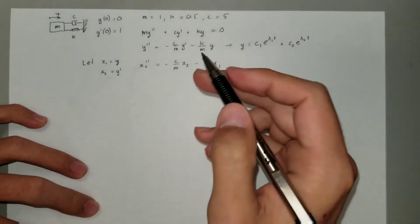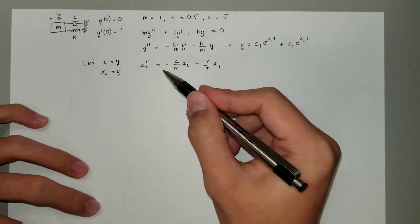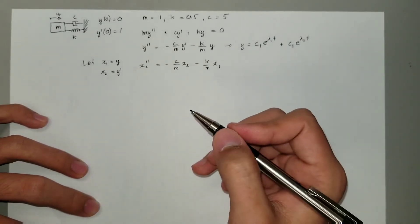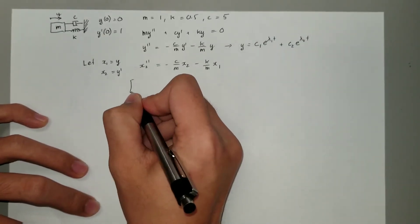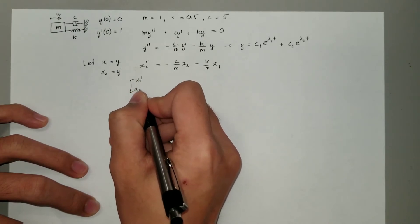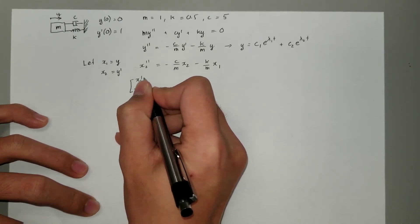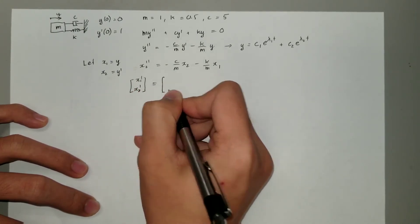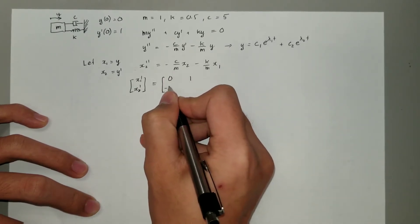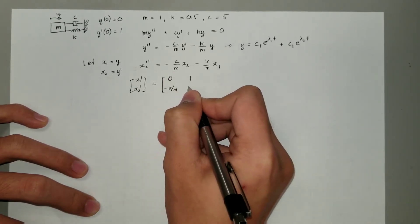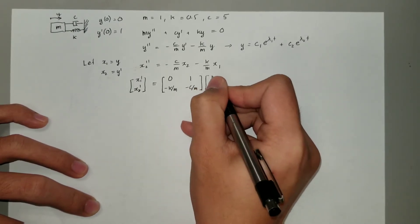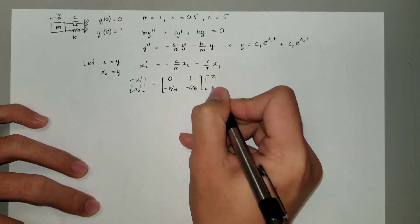We're going to rewrite this equation in matrix form in order to solve for the eigenvalues. So we have the vector [x1', x2'] equals the matrix [0, 1; -k/m, -c/m] multiplied by the vector [x1, x2].